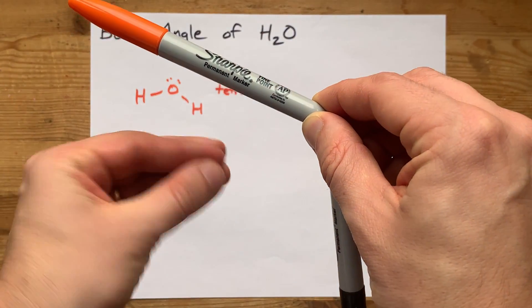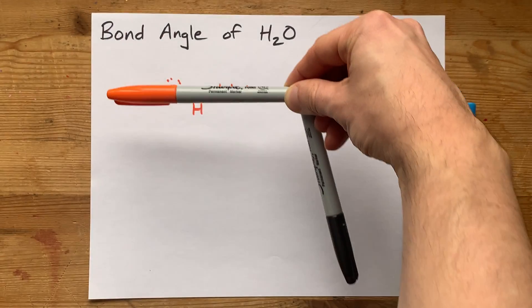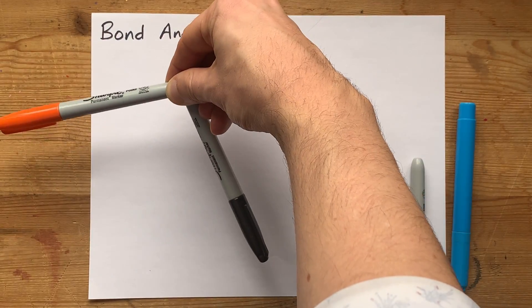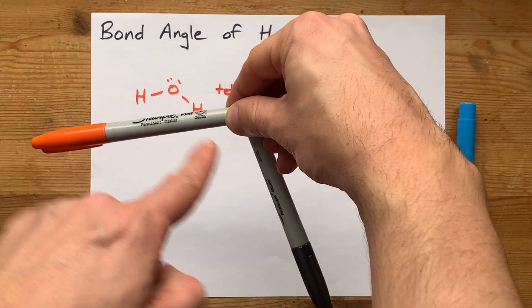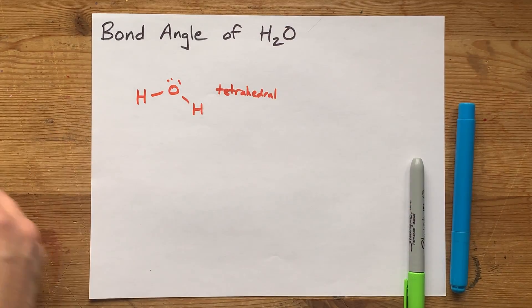but there's nothing actually there except the possibility of electrons, which means water itself has a bond angle that you can only measure between the two hydrogens.